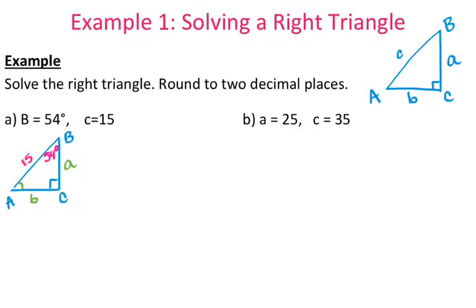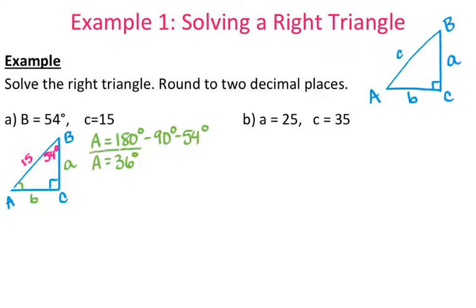Angle A is easiest to solve for because the angles in a triangle add up to 180 degrees. So 180 minus 90 minus 54 is 36 degrees. So angle A is 36 degrees. Another way to do that: since this is a right triangle, you know angle C is 90 degrees, so angles A and B always add up to 90 degrees. So you can just do 90 minus 54, which still gives you 36 degrees.